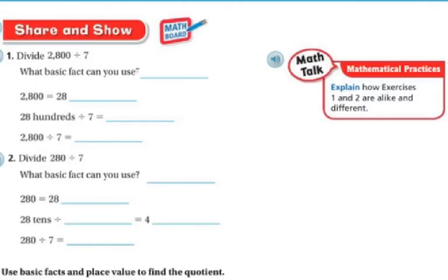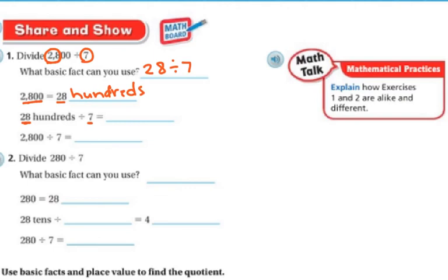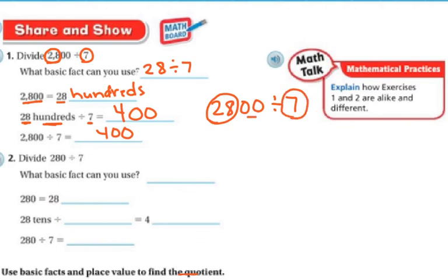Let's identify the basic fact for 2,800 divided by 7. My basic fact is 28 and 7, so it's 28 hundreds divided by 7. I know that 2,800 is 28 hundreds. Since 28 divided by 7 is 4, and these are hundreds, the answer is 400. I use the 28 and the 7, and I have two zeros, so 2,800 divided by 7 is 400.